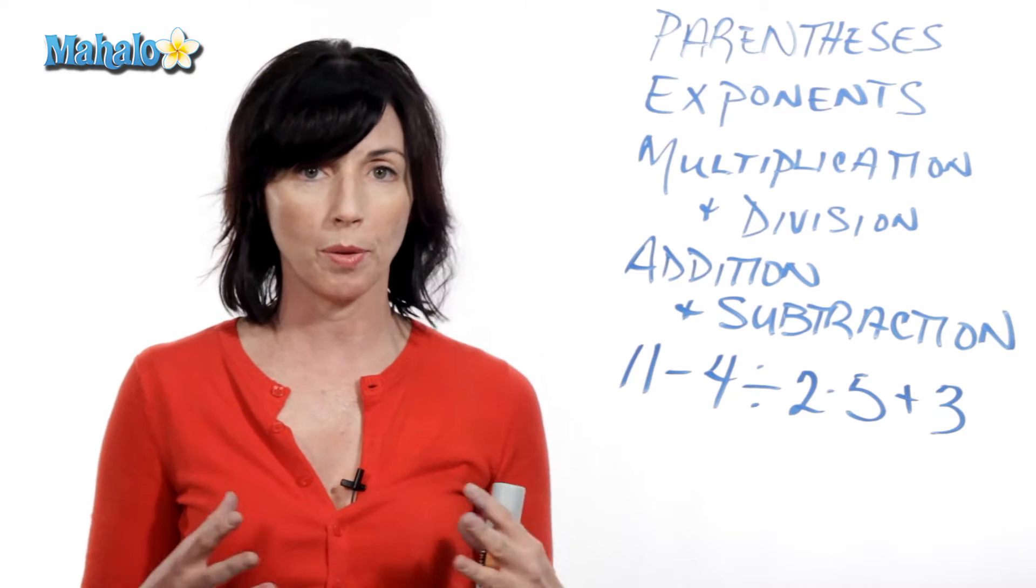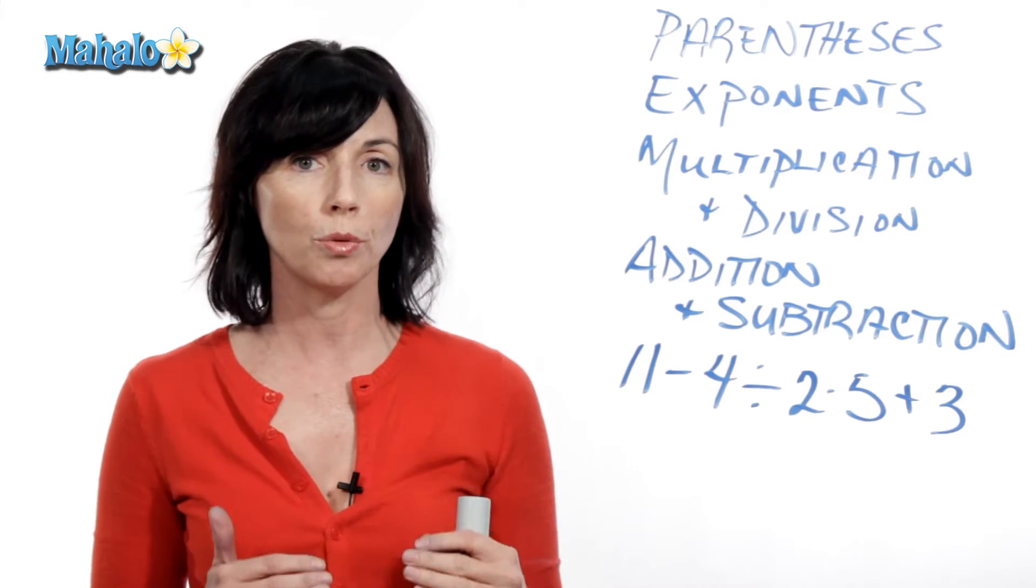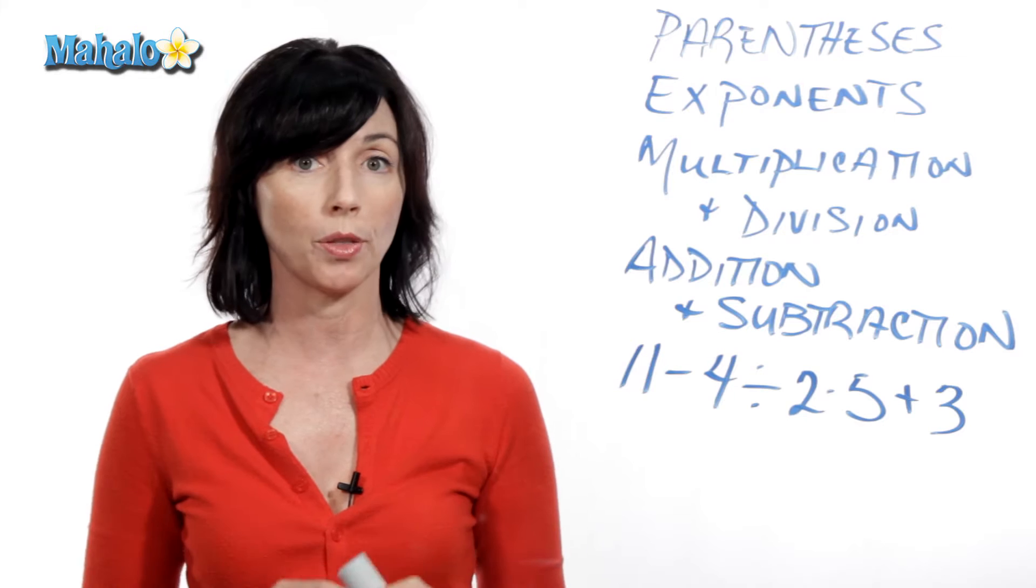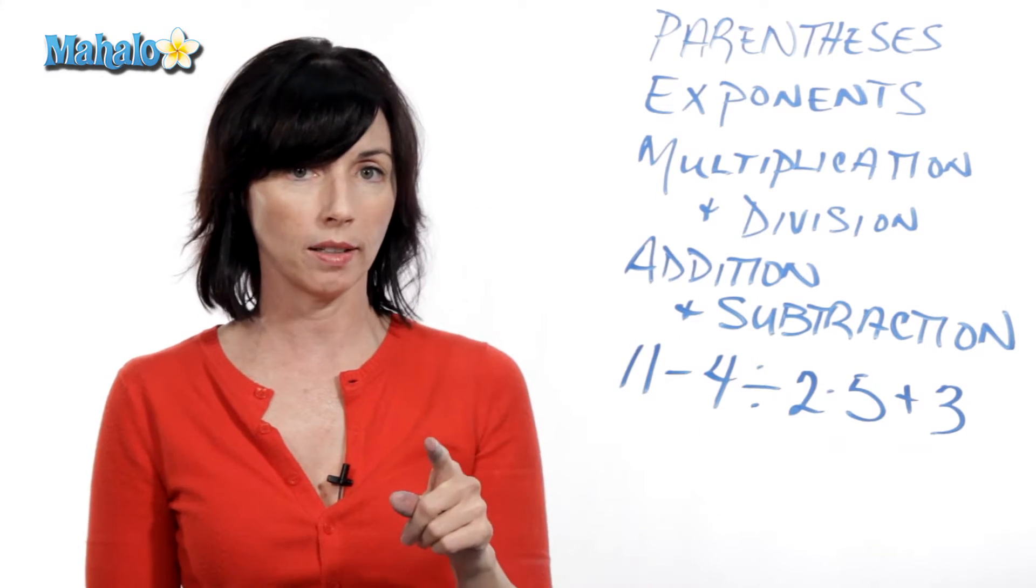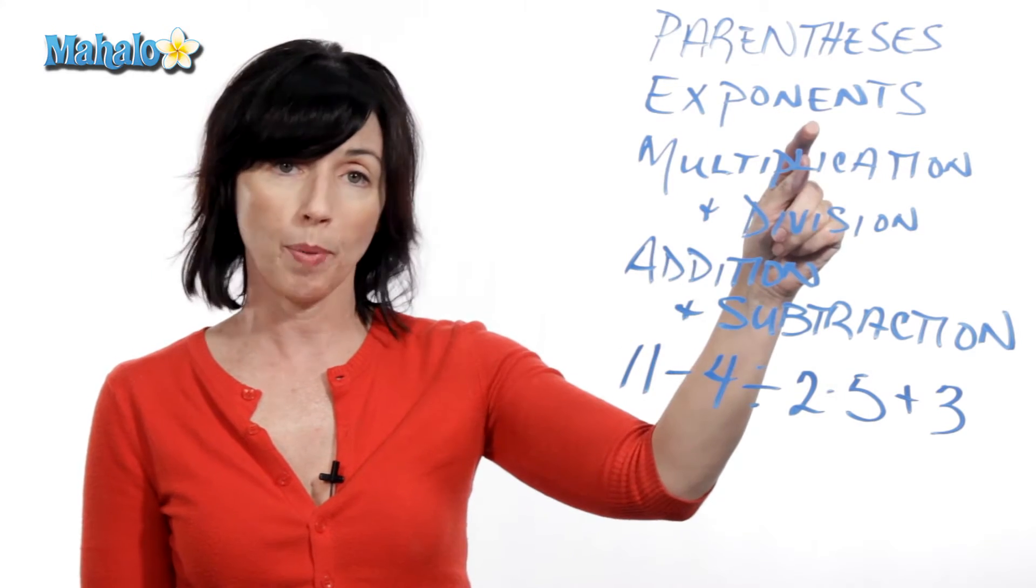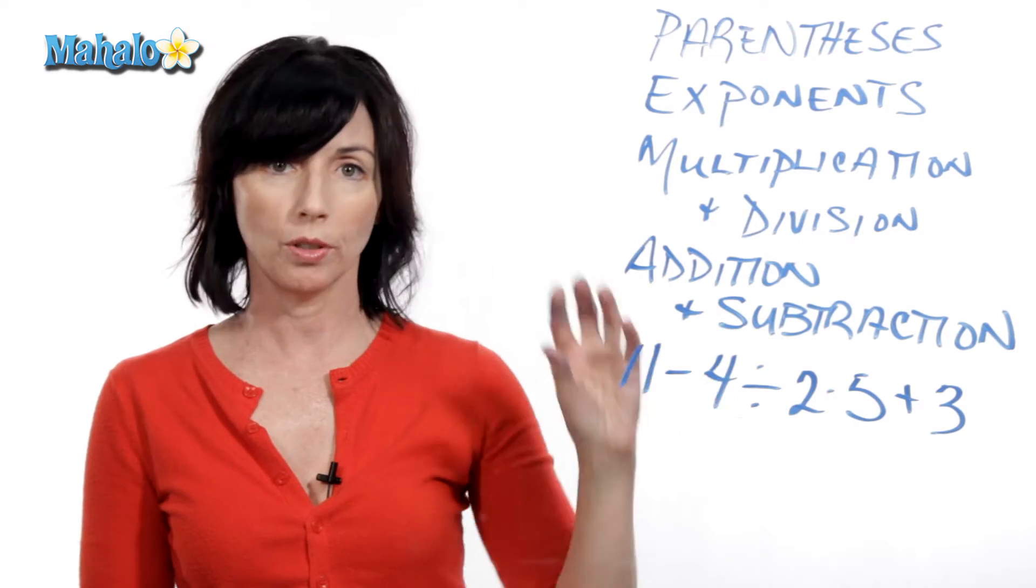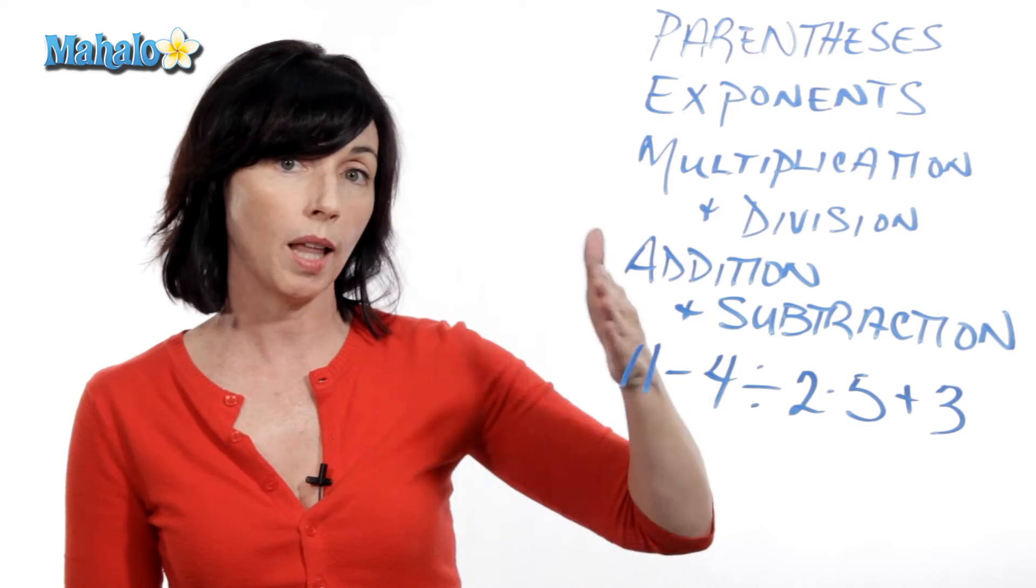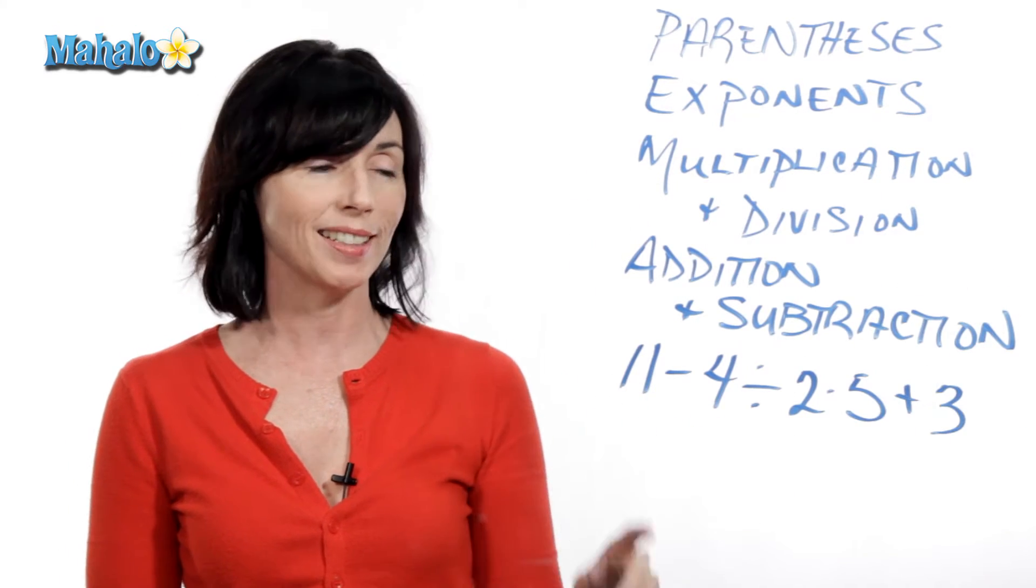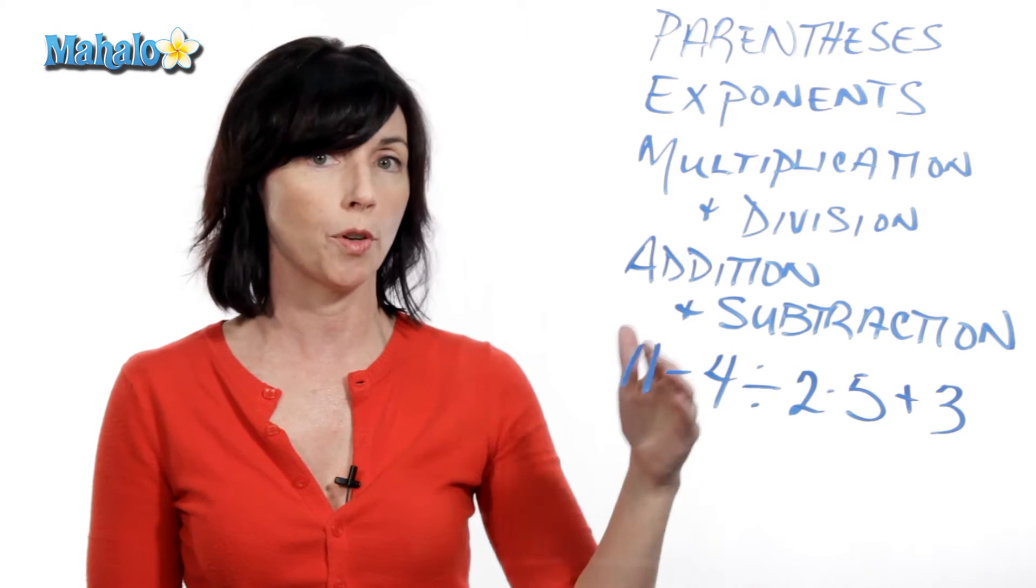Whenever you're doing arithmetic, there's an order in which you do the operations to make sure you get the right answer. Parentheses are the first thing you do. Anything in parentheses, you calculate that first. Then you do exponents. Whatever has an exponent, you calculate that. Then you do multiplication and division from left to right. And then finally, you do addition and subtraction from left to right.